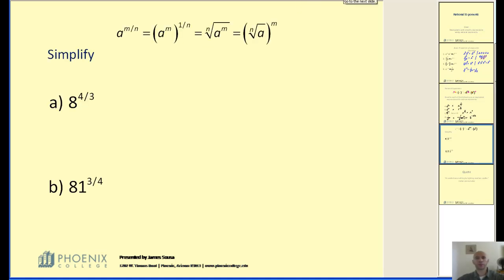Okay, let's apply this rule in the opposite direction. Now we're given an expression with a rational exponent and we want to simplify it. And the way we're going to do this is we're going to rewrite it in a radical form and then simplify it from there.